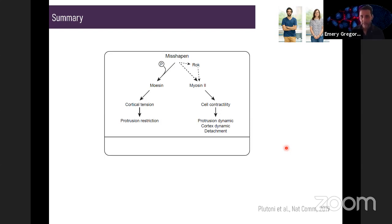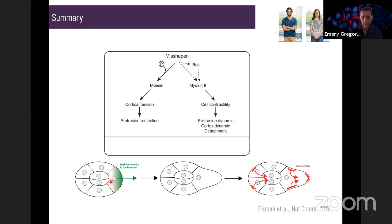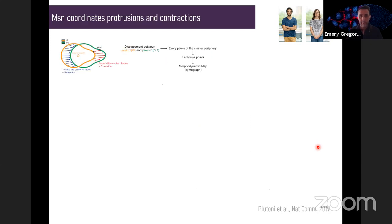This was unexpected — that misshapen would do these two things — but it suggests misshapen might be involved in coordinating the formation of protrusions and contractility. We wonder if misshapen could coordinate these events together. To test that, we used the ADAPT plugin, developed years ago by Barry Thompson's lab, to segment the periphery of the cluster in time-lapse recording and measure whether each peripheral point moves toward or away from the center of mass — contracting (blue) or extending (red).